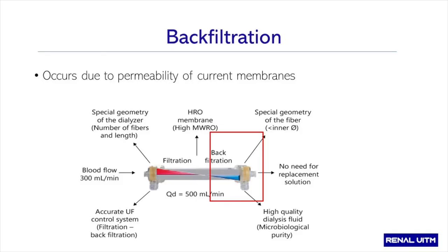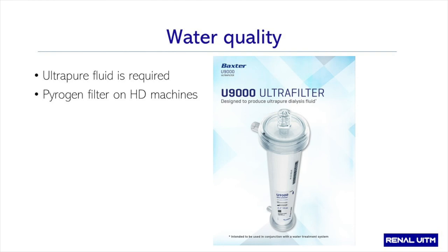When using a very permeable dialyzer, internal filtration occurs at the beginning of the dialyzer, while back filtration — where solute and water returns into the blood compartment due to pressure changes — also happens. Because of this, you need very good water quality, and it is required to use ultrapure fluid. This is achieved by a pyrogen filter on the HD machine, so that standard hemodialysis water produces ultrapure fluid very low in endotoxin and bacterial byproducts.